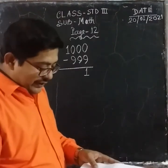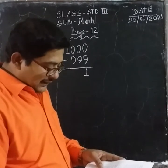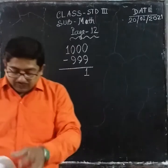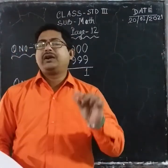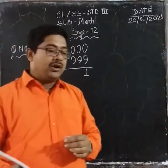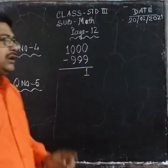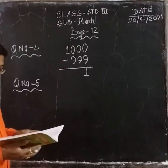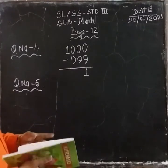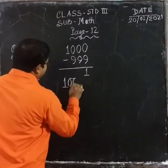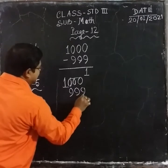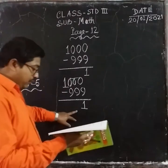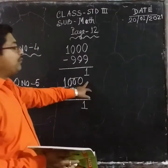How much should we add to the largest 3-digit number to form the smallest 4-digit number? In the same way: the smallest 4-digit number subtract the largest 3-digit number. We add 1 to the largest 3-digit number to form the smallest 4-digit number.